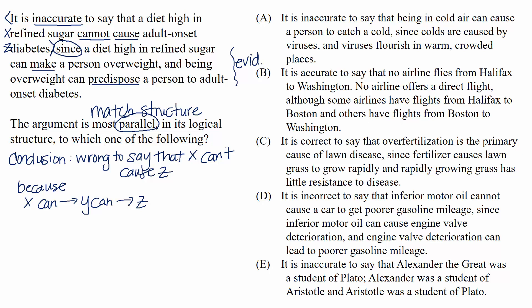A. It is inaccurate to say that being in cold air can cause a person to catch a cold. Well, we can stop right here. This would match if it said that it's inaccurate to say that being in cold air can't cause a person to catch a cold, but this choice says that it's inaccurate to say that causation can happen. So we can eliminate this one right off the bat.